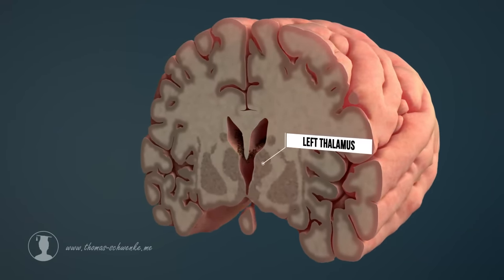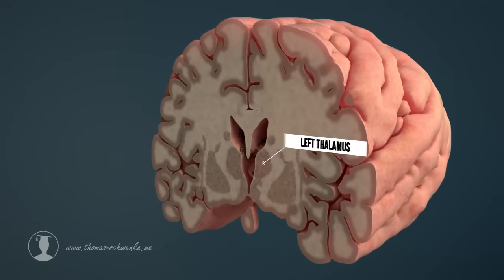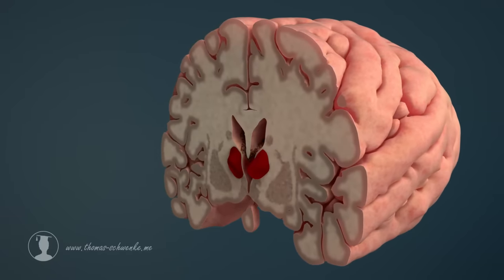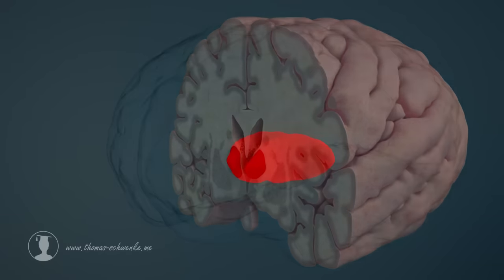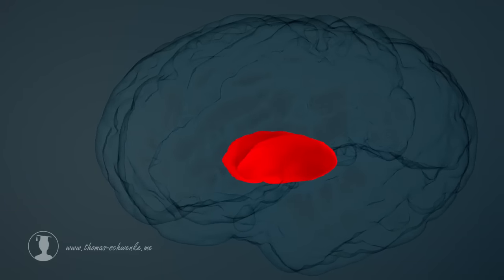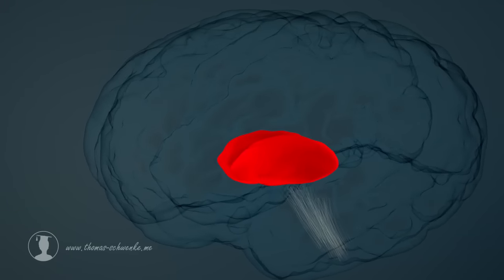All sensory perceptions, with the exception of the sense of smell, are processed and filtered by the thalamus before they reach the cerebral cortex. For this reason, we only perceive a few of the numerous sensory stimuli.